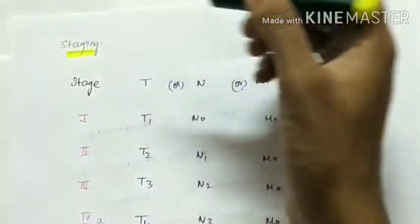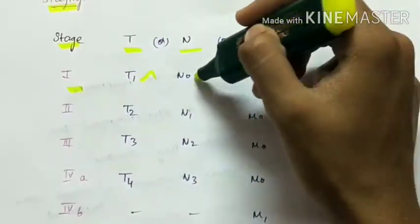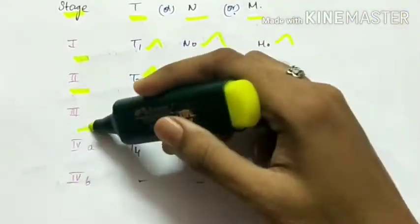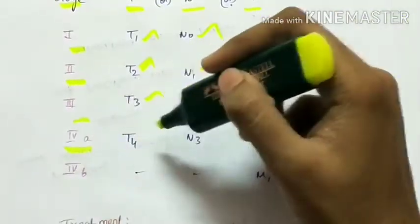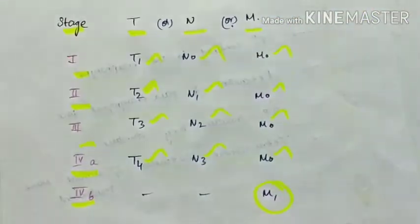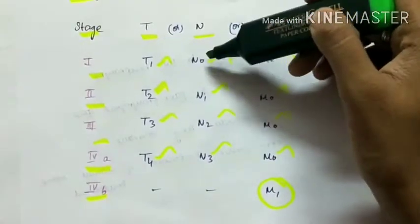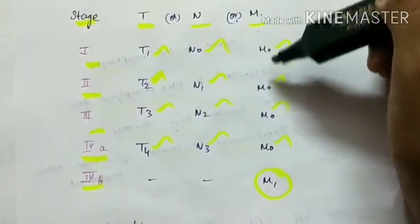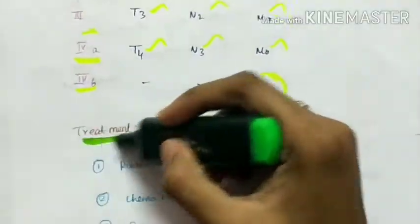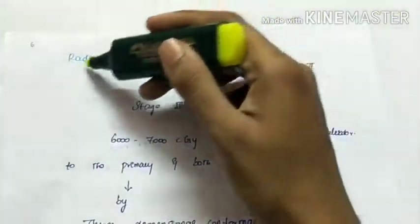For M (metastasis): M0 is no metastasis, M1 is if there is metastasis. Stage grouping: Stage 1 is T1 N0 M0. Stage 2 is T2 N1 M0. Stage 3 is T3 N2 M0. Stage 4a is T4 N3 M0. Stage 4b is any T, any N, but M1. This can be easily remembered - from stage 1 to 4, T is 1, 2, 3, 4, and N is 0, 1, 2, 3. M in all up to 4a is M0; only in 4b it is M1. So N is 1 less than T.